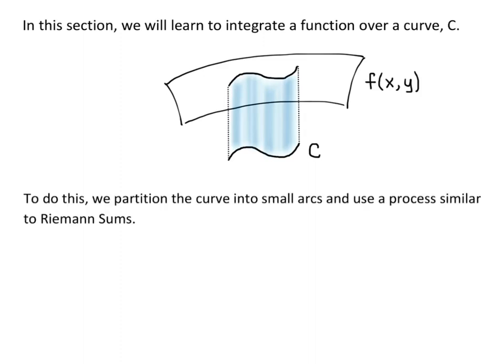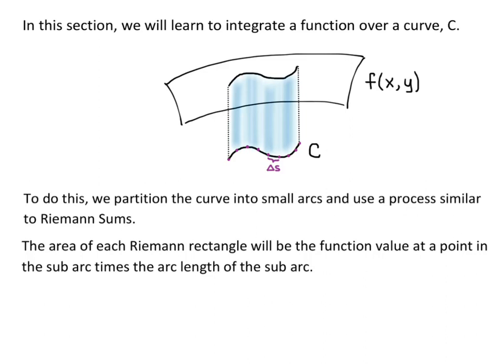To do this, we partition the curve into small arcs and use a process similar to Riemann sums. From a previous section, we used s, a lowercase s, for arc length. If I partition my curve into sub-arcs, then each little sub-arc I'm going to call delta s. The area of each Riemann rectangle will be the function value at a point in the sub-arc times the arc length of the sub-arc. The height of the rectangle equals f(x_i, y_i), where (x_i, y_i) is some point in the sub-arc with length delta s. So the area of that rectangle is f(x_i, y_i) times delta s.